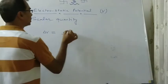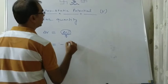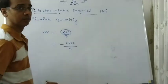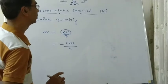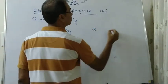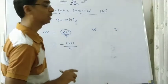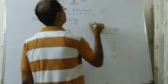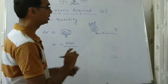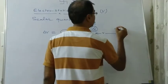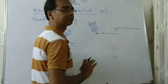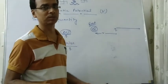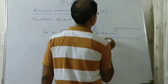Potential difference equals delta U by Q. Now, delta U is actually minus of work done by electrostatic force. Work done by electrostatic force — if there is a charge Q and another small charge Q, then the electrostatic force is going to repel this small Q. Since the large Q is fixed, the small Q will be repelled to the point where the force becomes zero, which is at infinity.